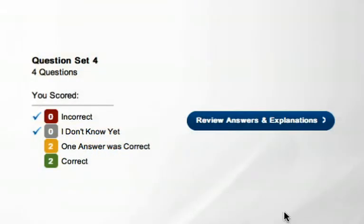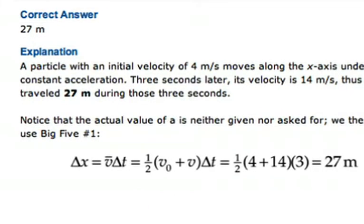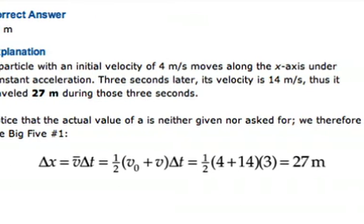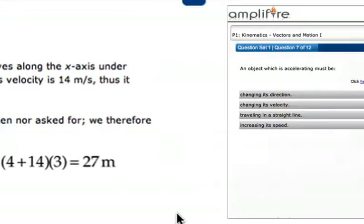After you answer your first set of questions, Amplifier shows you the learning associated with each question in a flashcard-like format. These explanations are taken directly from the Princeton Review science workbook, but with Amplifier, learning is so much more efficient because all the information is at your fingertips. You no longer have to flip back and forth between the questions and the corresponding explanations.